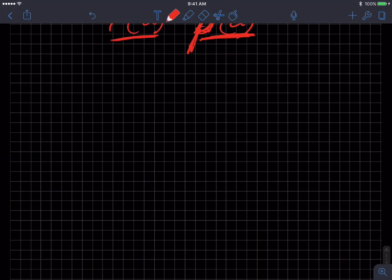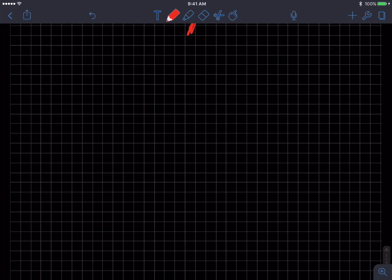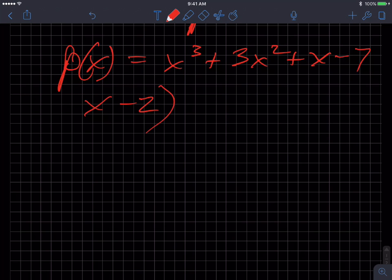So let's see if we can create an example. I didn't prepare this. Let's say my P(X), F(X), is X cubed plus 3X squared plus X minus 7. And let's try to divide by X minus 2. This is totally random. If it works out, oh my goodness, but I'm hoping there'll be a remainder.